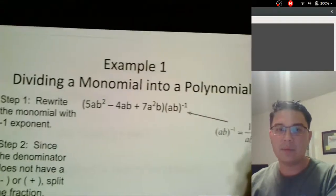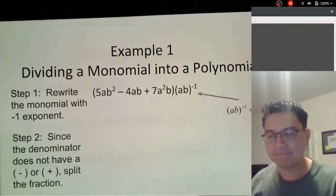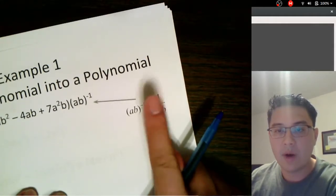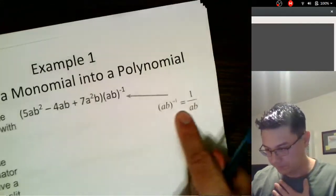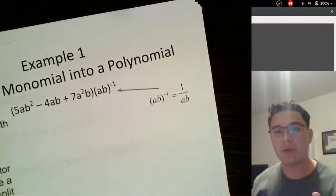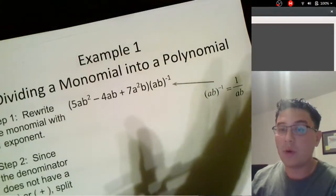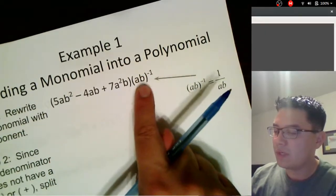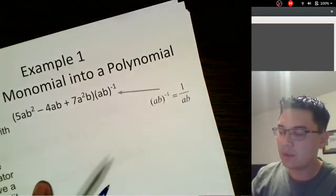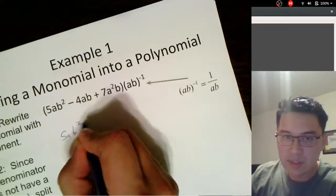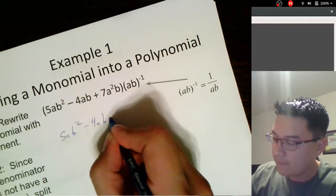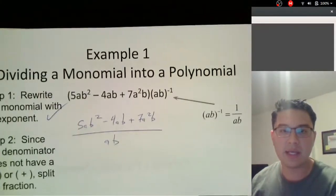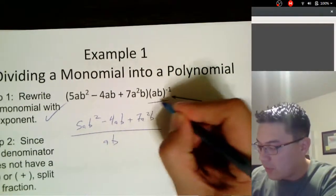Dividing a monomial into a polynomial — your problems are typically going to be written in this format. Remember the negative exponent rule from our properties of exponents in section 5.1. Whenever you see a negative exponent, get rid of it — rewrite it as a fraction. So we're going to rewrite this as 5ab² minus 4ab plus 7a²b, all over ab. That's step number one — all we've done is rewritten this part of our polynomial. Though it looks like multiplication, it is ultimately division.